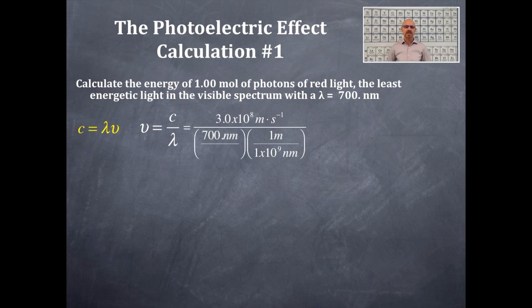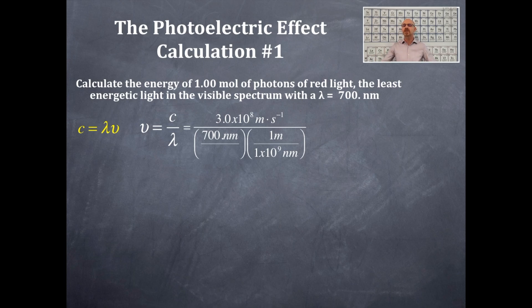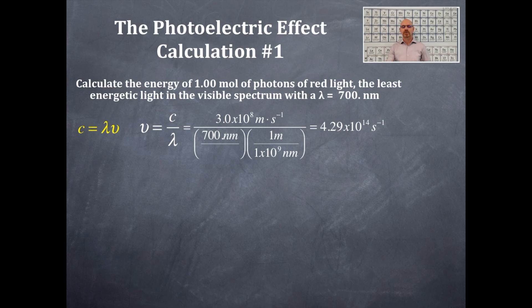We have 700 nanometers, but in order to cancel out the meters from the speed of light, we need to convert nanometers into meters using the conversion 1×10⁹ nanometers per 1 meter. This cancels out the nanometers and the meters, leaving us with per second — which is frequency, since frequency is per unit of time.